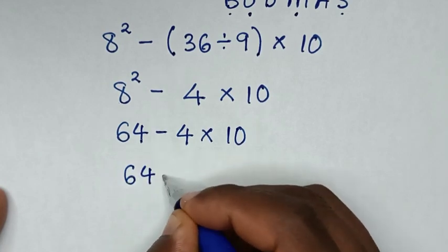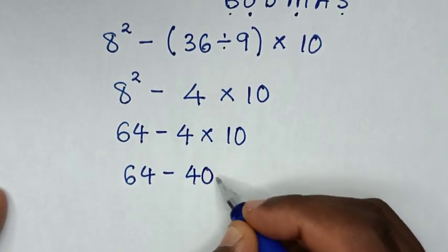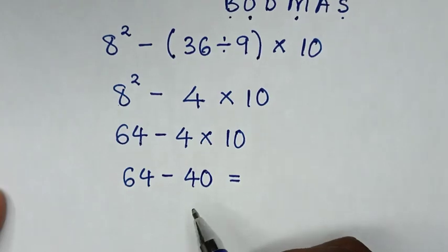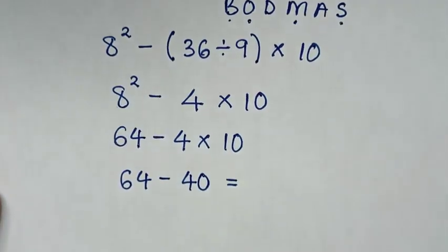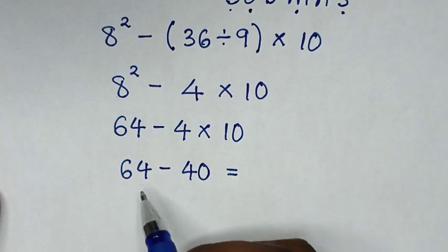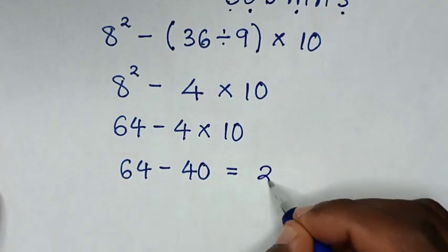So it will be 64 minus 40 equals, and here we're left with this operation of subtraction only. So we'll deal with 64 minus 40 is 24.